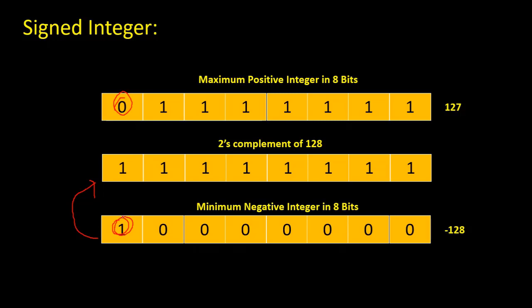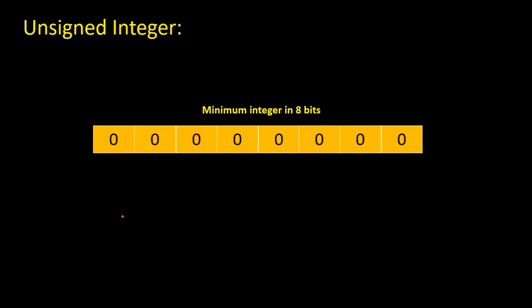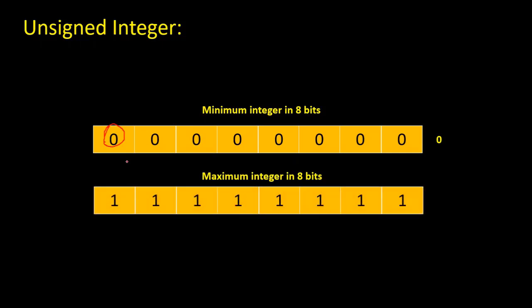Now let's talk about unsigned integers. The minimum integer we can store in eight bits is this one. In this case, the leftmost bit is not a sign bit, and this binary number is equivalent to zero. The maximum integer we can store in eight bits is this integer, and this number is equivalent to 255.